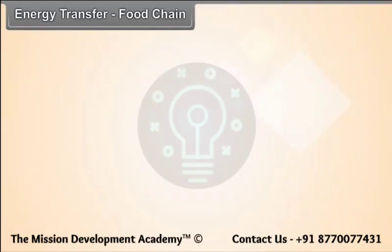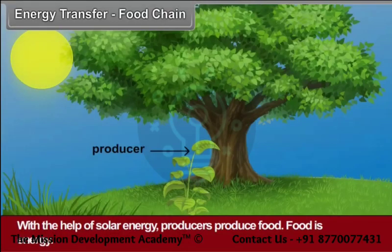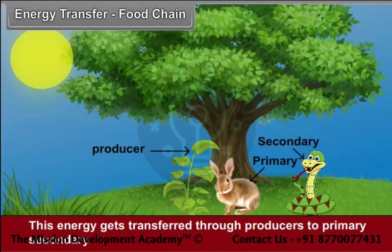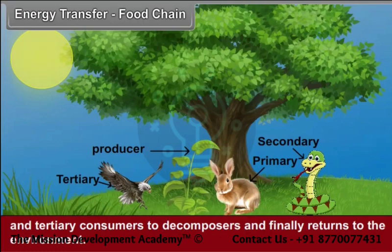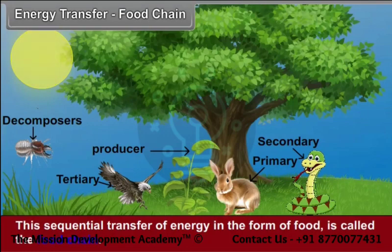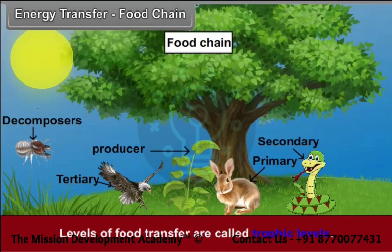Energy Transfer and Food Chain: With the help of solar energy, producers produce food. Food is energy. This energy gets transferred through producers to primary, secondary, and tertiary consumers, then to decomposers, and finally returns to the environment, completing the energy cycle. This sequential transfer of energy in the form of food is called the food chain. The levels of food transfer are called trophic levels.